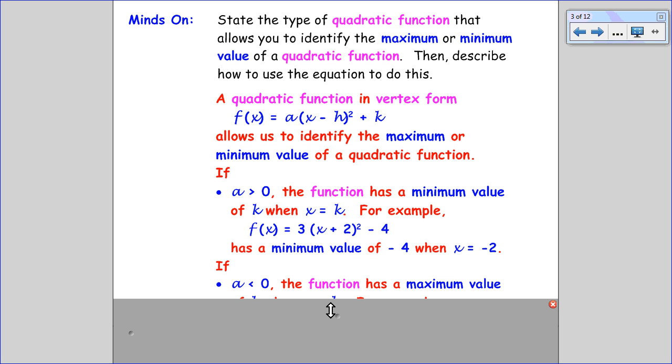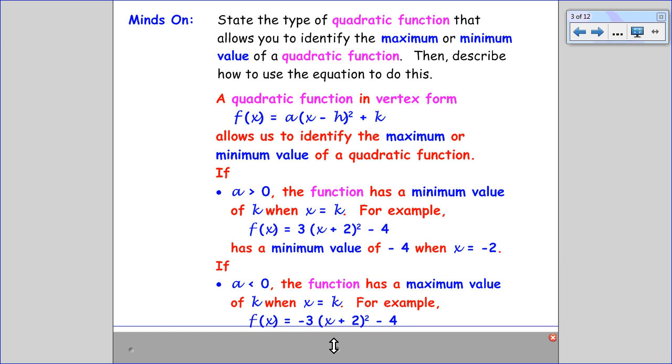However, if a is negative, the function has a maximum value because it opens up. So if I consider a similar equation, the difference being the a value is negative, the maximum value is negative 4, and it occurs when x is negative 2.